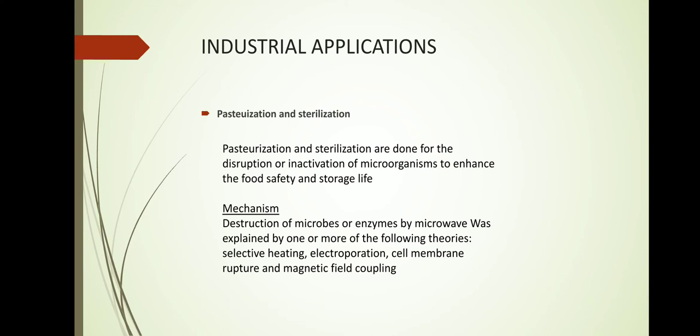Now we are going directly to the topic of applications. There are two types of applications: industrial and domestic. First, we discuss industrial applications of microwave processing. The first two applications are pasteurization and sterilization. Pasteurization and sterilization are done for the disruption or inactivation of microorganisms to enhance food safety and storage life. Destruction of microbes or enzymes by microwaves is explained by one or more of the following theories.